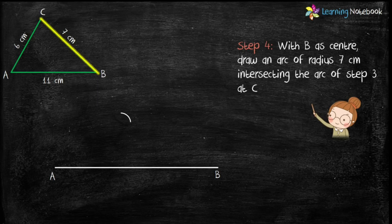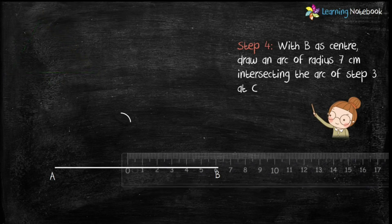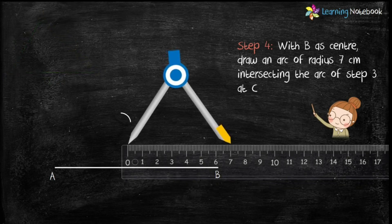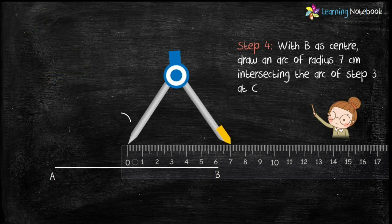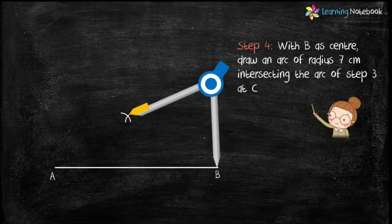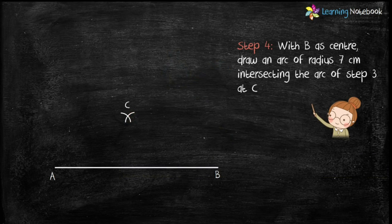So students, to do this step, open the compass with radius 7 cm. Now, place the needle of the compass at point B and draw an arc which intersects the arc of step 3 at point C.